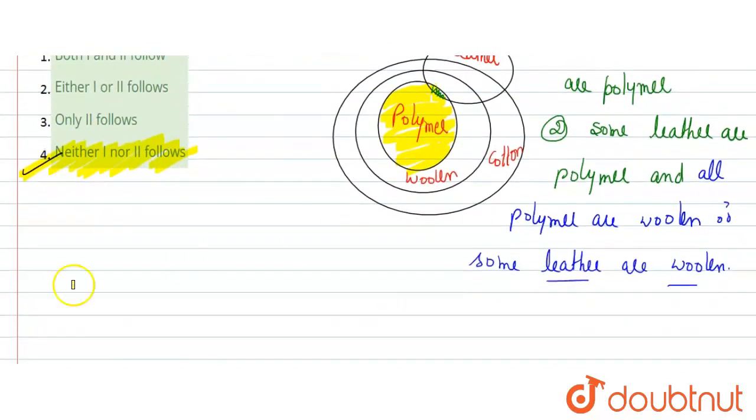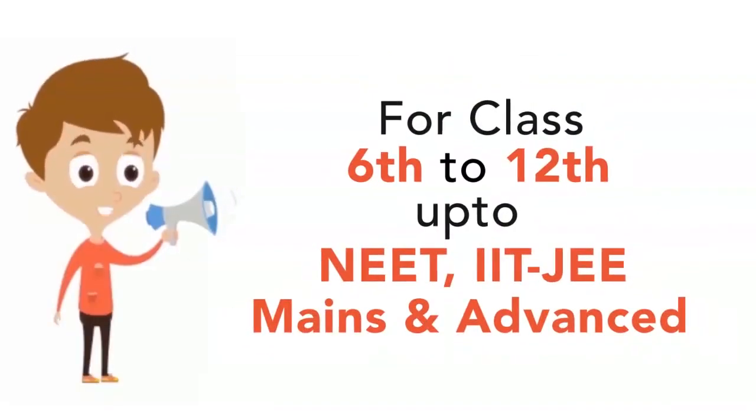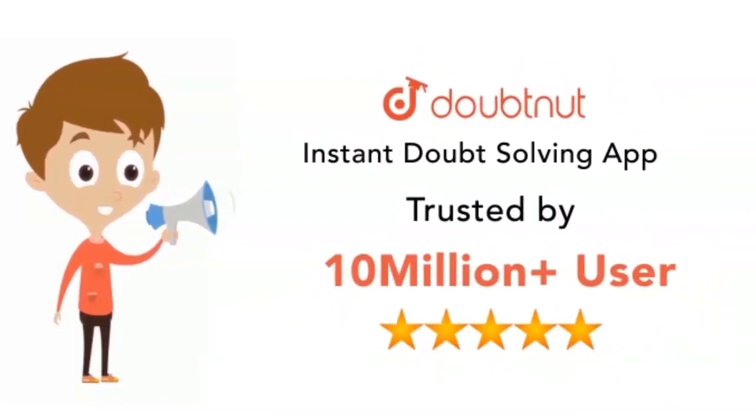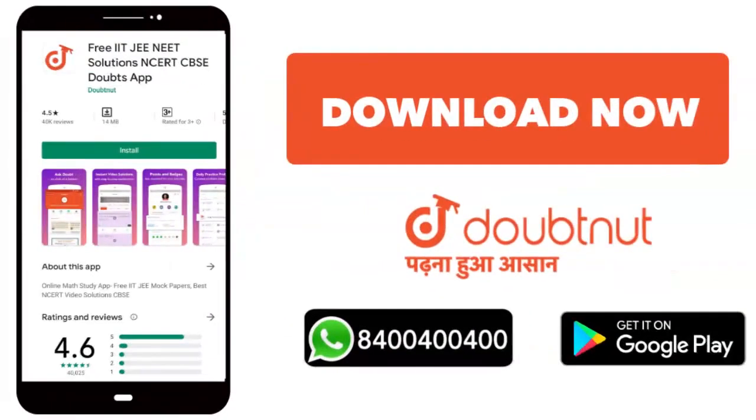Toh yaha aapka answer aayega option number 4, neither one nor two follow. So option number 4 is the correct answer. Thank you. Class 6 se leke 12, NEET, IIT JEE mains aur advance ke level tak 10 million se jada students cover ho sa. Aaj hi download karen Doubtnut app ya WhatsApp kijiye apne doubts at 8400400400.